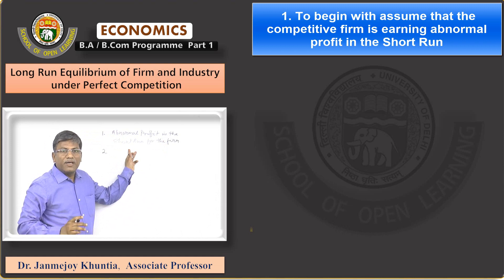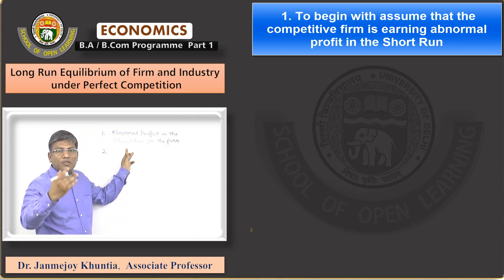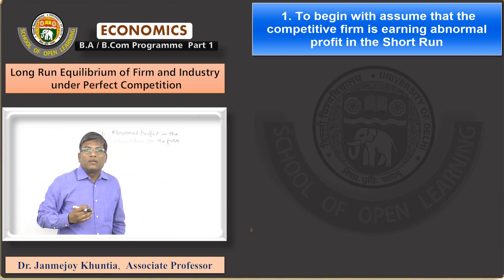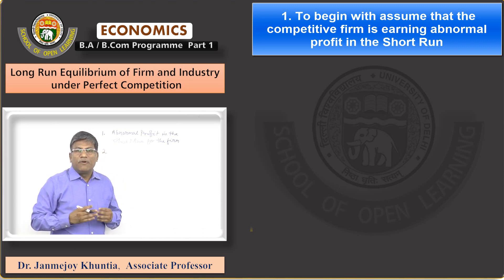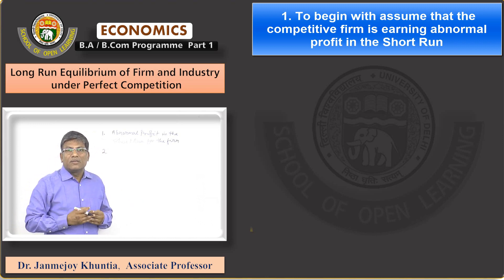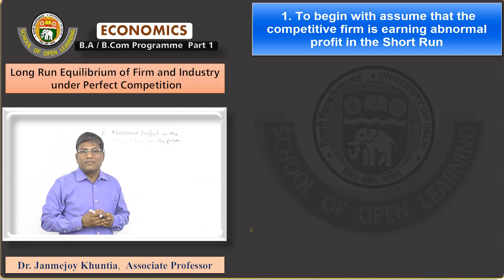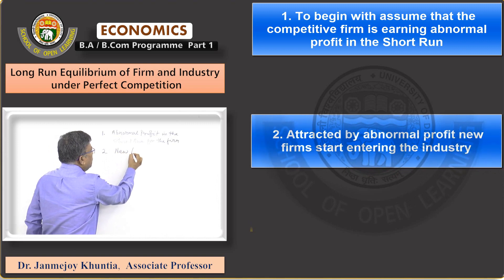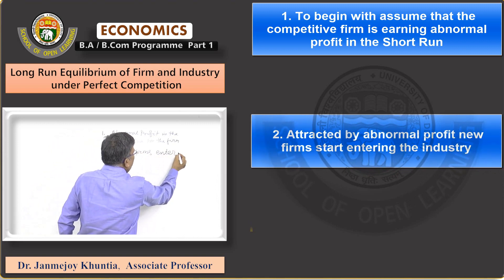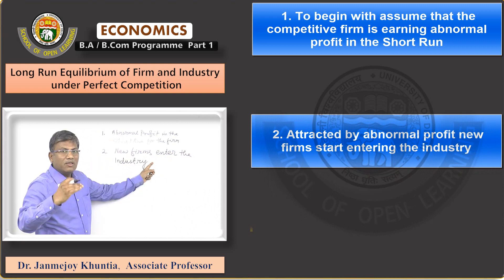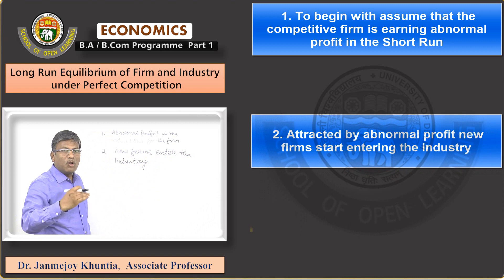The question is whether this abnormal profit will continue also in the long period. Under perfect competition there is free entry, so when a firm is earning abnormal profit, attracted by this, new firms will enter the industry because of free entry. So the second step is: new firms enter the industry in the long run when the firm is earning abnormal profit in the beginning.